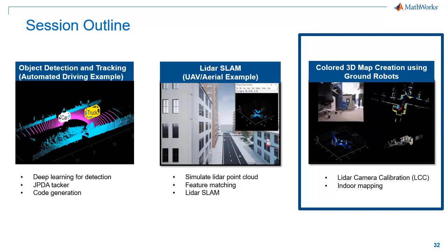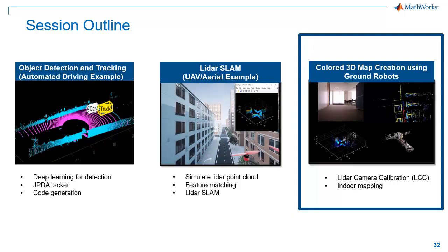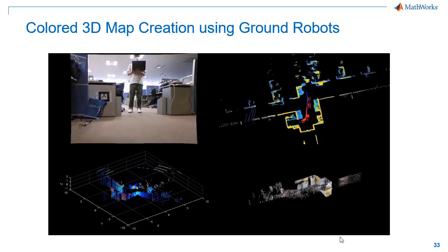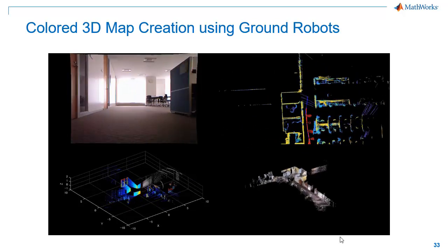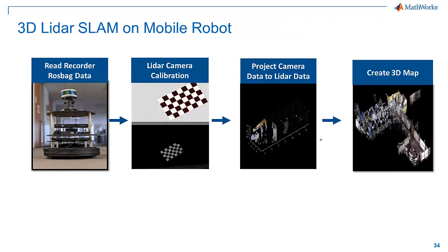Here we'll perform LiDAR camera calibration to combine camera data with LiDAR data, and then use these colored point clouds to create the 3D map of the arena. To create this demo, we ran a TurtleBot in one of our office arenas and collected camera, LiDAR, and odometry data into a ROSBAG. The workflow starts with reading LiDAR and camera data from the recorded ROSBAG. Then we use checkerboard images and corresponding point clouds to do LiDAR camera calibration. After that, we use the calibration data to project camera data onto LiDAR data, and finally use the colored point cloud to create a colored map of our office environment.